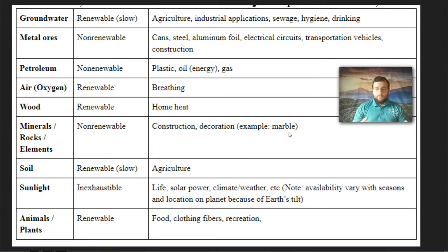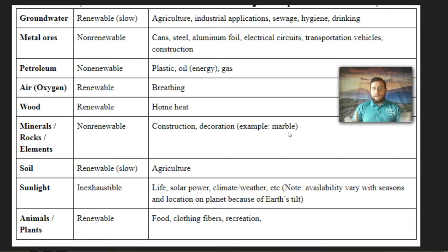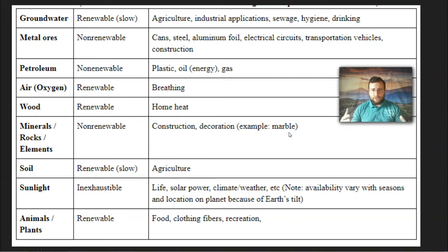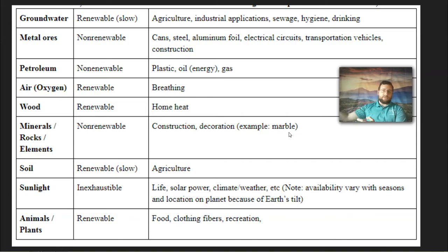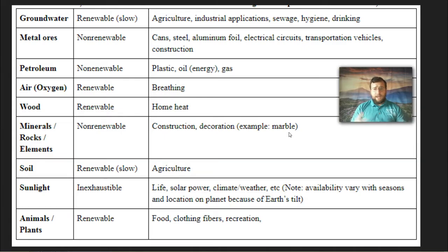Soil is also renewable, although it takes a very long time to renew. We have to be very careful the way we use soil so we don't deplete it too fast, because it takes a long time for processes such as erosion, deposition, and the nutrient cycle by decomposers to re-enrich it. Fertilizers are not the answer because you're still getting the nutrients from somewhere else, and some of them — like phosphorus — are hard to find. So you've got to make sure to use the soil wisely.